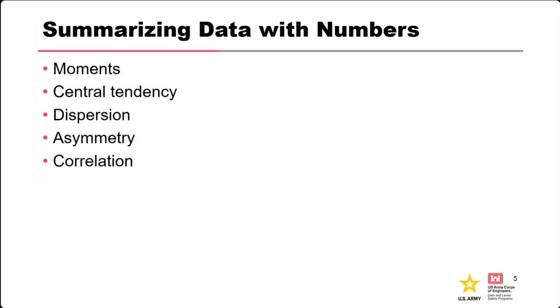Continuing on with summarizing data with numbers — this gets a little bit more into things that are directly applicable in risk analysis and things we will explore further when we get into probability and statistics. We're going to talk about a few concepts: a general refresher on moments; central tendency, which is the probability term for typical value; dispersion, which is the probability term for variability; and asymmetry, which describes whether your uncertainty is symmetrical about the typical value — so are values higher than typical about as likely as values lower than typical?